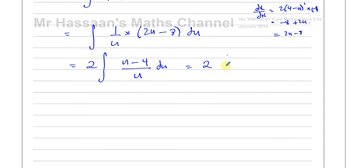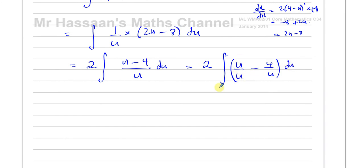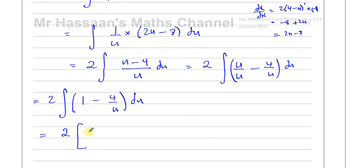Now I can get this ready by splitting into two separate fractions. This is not directly of the ln form because the numerator is not the differential of the denominator. But I can split it into u over u minus 4 over u, which becomes 1 minus 4 over u. So I have 2 times the integral of 1 minus 4 over u du. I've just spent all that time getting it ready — now it's ready to integrate.